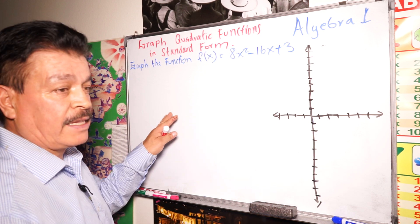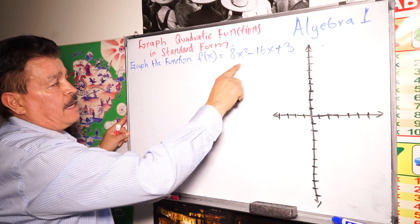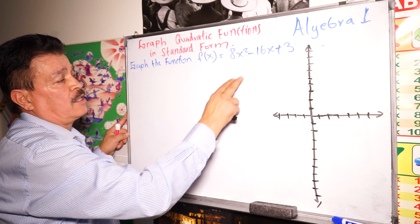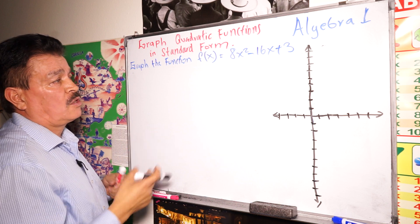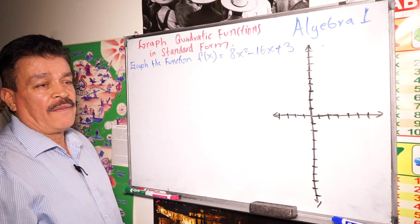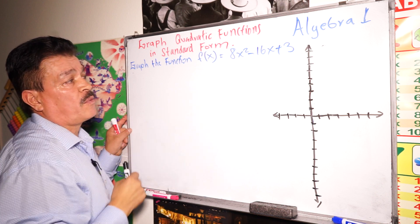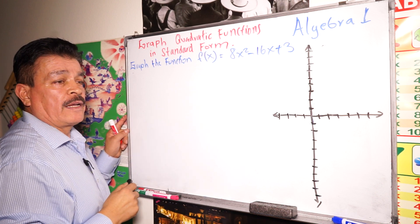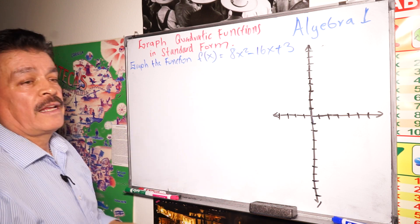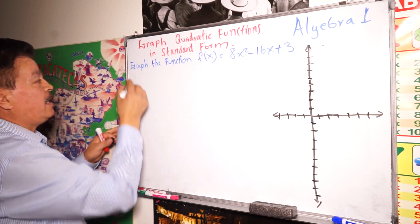We need to graph a quadratic function in standard form. In this case, the function is not in standard form, so we have to change it. To graph the parabola, we first need to write it in vertex form. We have to complete the square for the quadratic expression in terms of x.